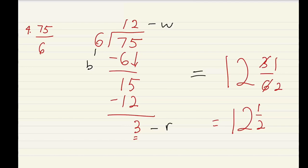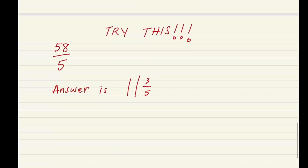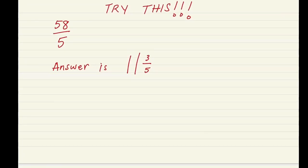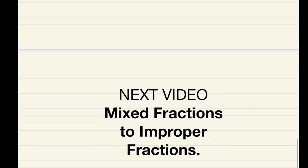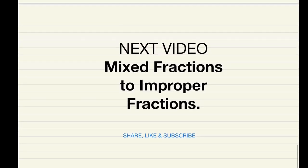That's it for now. I'm going to leave this example here for you to try it. It's 58 over 5 and your answer is supposed to be 11 whole 3 out of 5. Let me know how you do and if this video was helpful to you. My next video is going to be on changing mixed fractions to improper fractions and I'll see you in my next video.